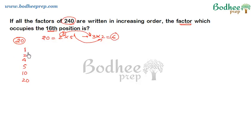So the factor 1 will occupy the first position. The factor 2 is occupying the second position. The factor 4 is occupying third. This is occupying fourth, and this is occupying fifth position, and this is occupying the last position.